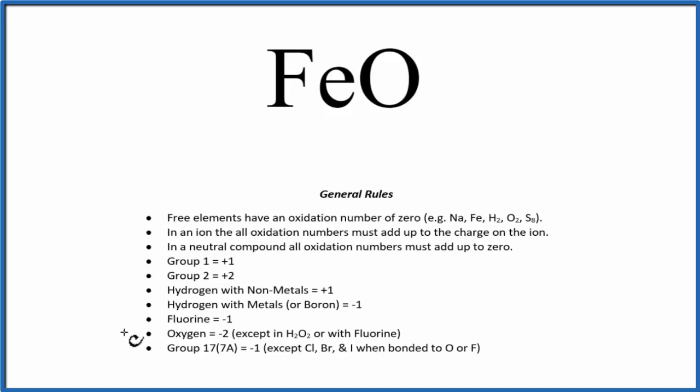We do see, down here, that oxygen has a minus 2 oxidation number, except in just a few cases. So we know that the oxygen is going to have a minus 2 as its oxidation number.